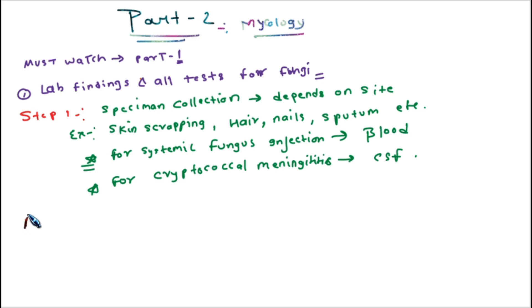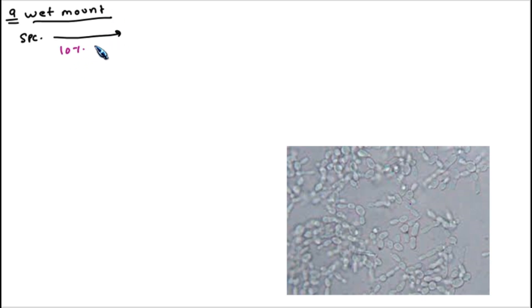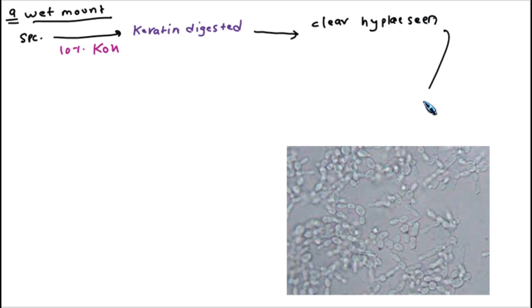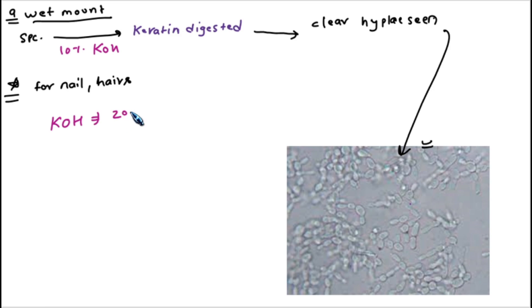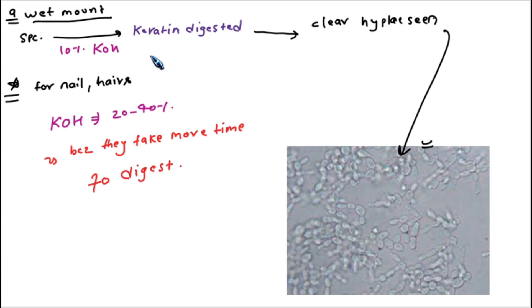The first topic in lab findings is microscopy. We collect the sample and add 10% KOH, which digests the keratin material — keratin digestion — and the hyphae become clear. Clear fungal hyphae will be observed, as you can see in the diagram. This technique is called a wet mount. For hair and nails, KOH concentration is 20 to 40% because hair and nails take more time to digest. 10% KOH is used for skin.